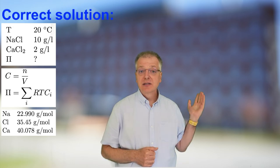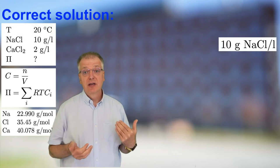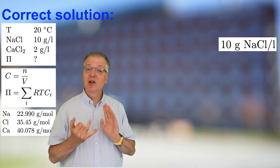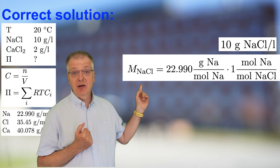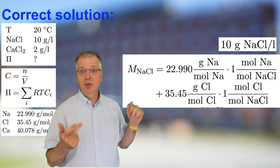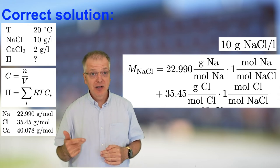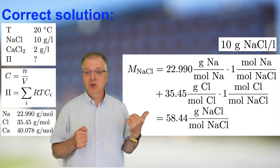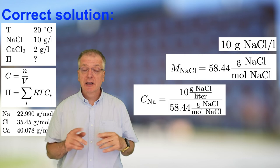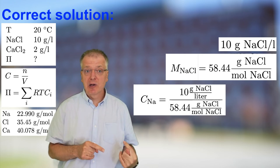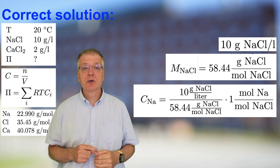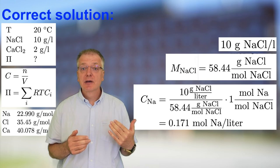What should we do instead? Since we have 10 gram of sodium chloride, the molar weight we are interested in is the molar weight of sodium chloride. Since 1 mole of sodium chloride consists of 1 mole of sodium and 1 mole of chloride, we get 22.990 gram of sodium per mole sodium plus 35.45 gram of chloride per mole chloride, giving us 58.44 gram of sodium chloride per mole sodium chloride. To calculate the concentration of sodium, we take 10 gram of sodium chloride per liter, divide by 58.44 gram of sodium chloride per mole sodium chloride, then multiply by 1 mole of sodium per mole of sodium chloride, giving us 0.171 mole of sodium per liter.